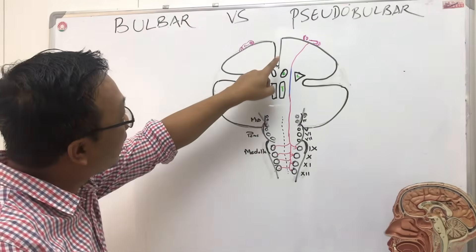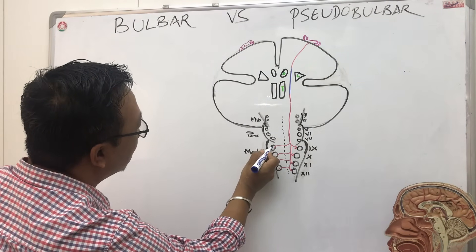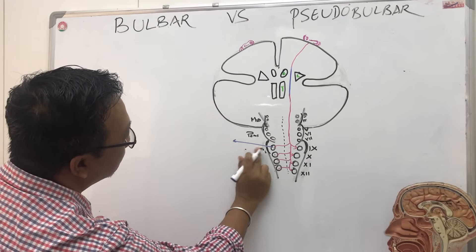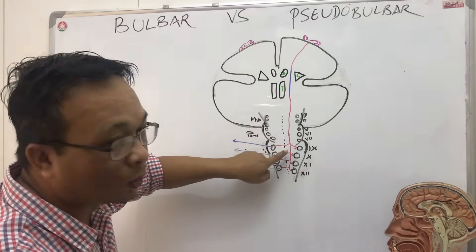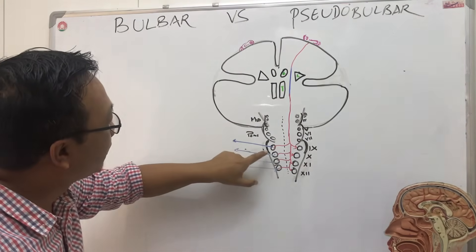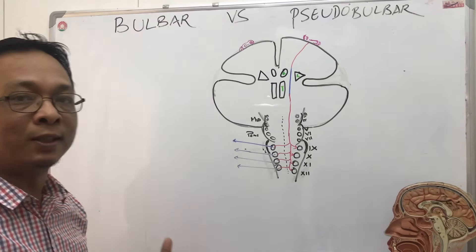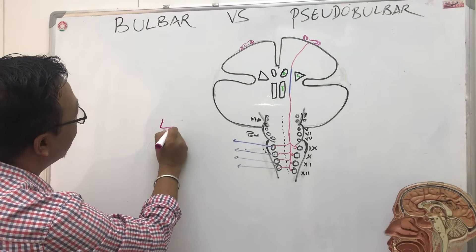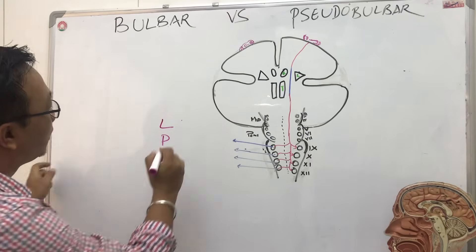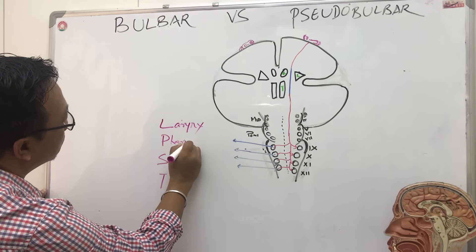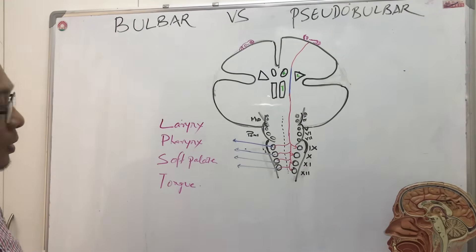From nerves nine, ten, eleven, the lower motor neuron starts in the medulla. The bulb is present in the medulla, and from there the lower motor neuron starts from nine, ten, eleven, twelve. Remember what they supply — use the acronym LPST: L for larynx, P for pharynx, S for soft palate, and T for tongue. So nine, ten, eleven, twelve control this group of muscles.